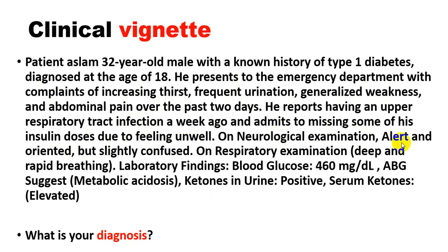On neurological examination, he is alert and oriented but slightly confused. On respiratory examination, he has deep and rapid breathing. On laboratory examination, his blood glucose is very high at 460. Arterial blood gases suggest metabolic acidosis. There are ketones in the urine and serum ketones are also elevated.